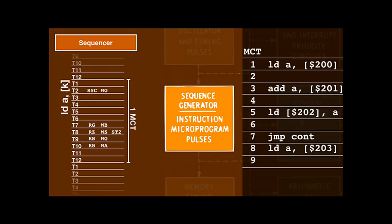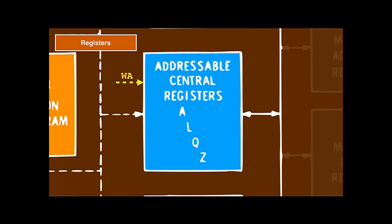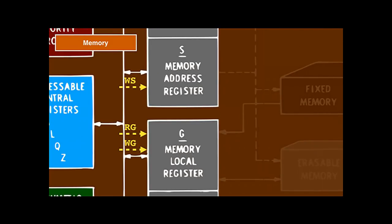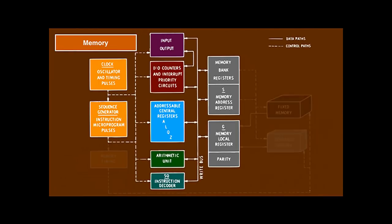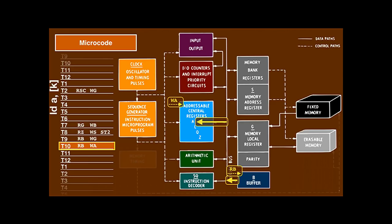The sequence generator contains a collection of 12-step microprograms for each MCT for each instruction, like the one for the load instruction. In each step, the entries send control pulses to the other units connected through the write bus. The control signal WA instructs the register units to put the contents of A onto the write bus, and RA makes it read the value on the bus into A. Memory is also connected to the write bus — WS will copy the bus contents into the memory address register, and RG and WG will read and write the G register, which buffers the cell's value after a read and before a write.